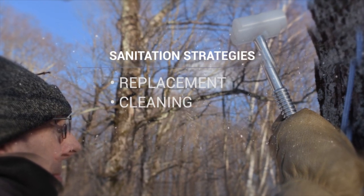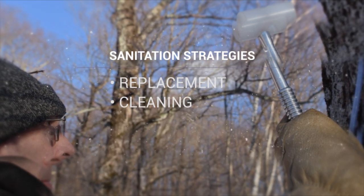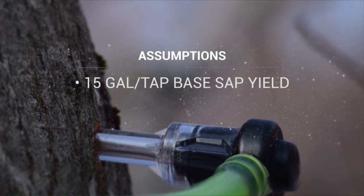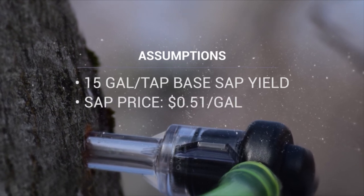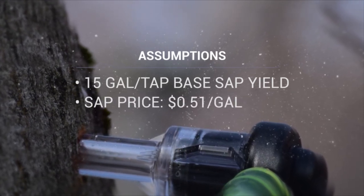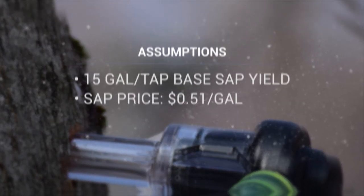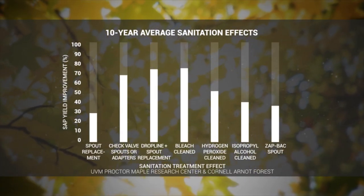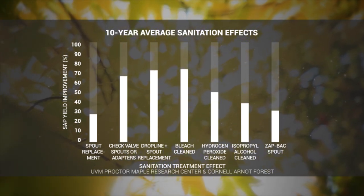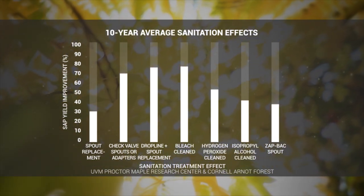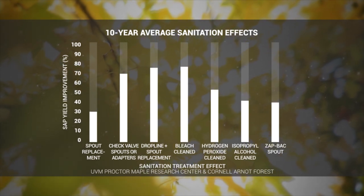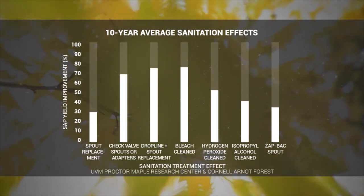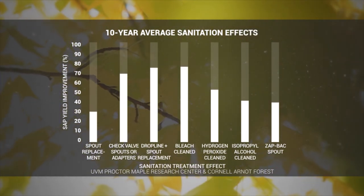There are several possible strategies for achieving and maintaining good sanitation. In general, these fall into the categories of replacement or cleaning. The following example assumes a sap yield of 15 gallons per tap for uncleaned and used spouts and a net value of about 50 cents per gallon. Note that the outcome from sanitation improvements will vary from year to year due to seasonal variations. Some years sanitation changes will have big effects, and other years these changes will have little or no effect.